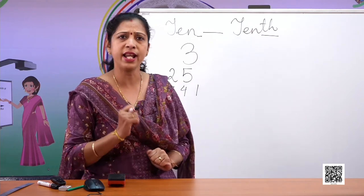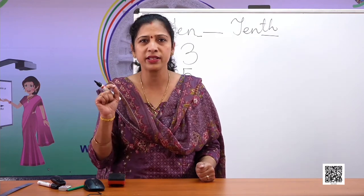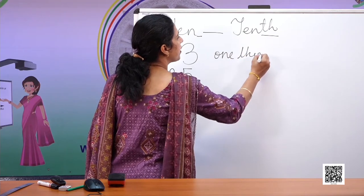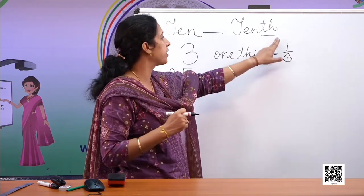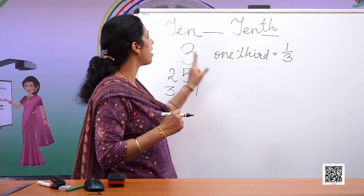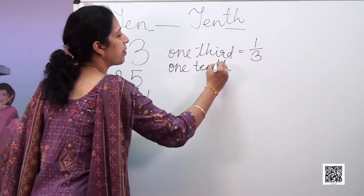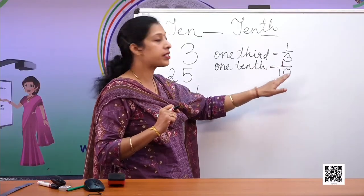Let's understand what tenth and hundredth are. You must remember fractions — one tenth, one eighth, one third, one fourth. When we say one third, we write it as one out of three. The three means three equal parts and the one means one part out of those three equal parts. So one tenth means one out of ten equal parts.